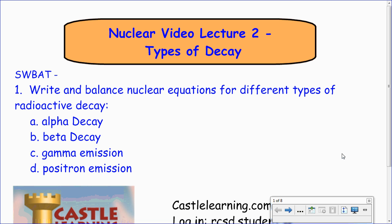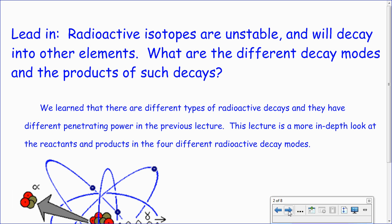We are quickly approaching the end, and our second lecture in nuclear chemistry is going to cover more depth, the types of radioactive decay. The objective here is to write and balance nuclear equations for different types of radioactive decay.